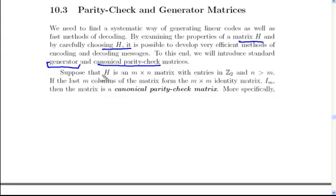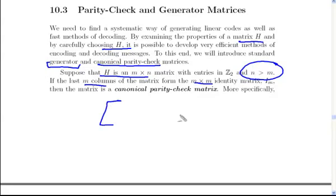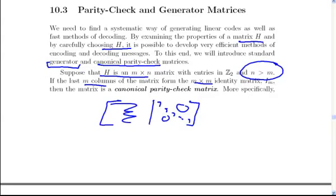Suppose we have this matrix H, and suppose that the last M columns form an M by M identity matrix. Typically you will have the number of rows less than the number of columns. So the last M columns form an identity matrix. It's going to look something like this — ones along the diagonal, zeros below, and arbitrary entries in the remaining block. You can easily tell visually whether a matrix is a canonical parity check matrix.